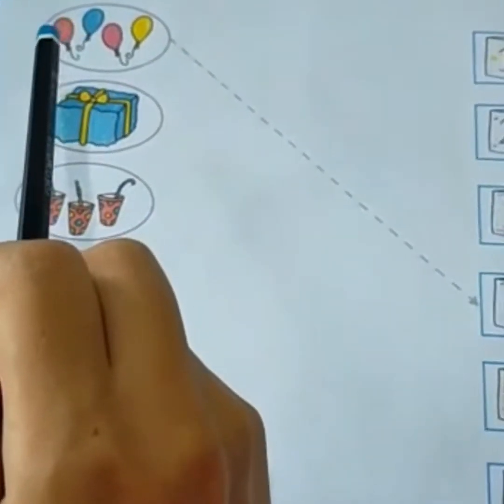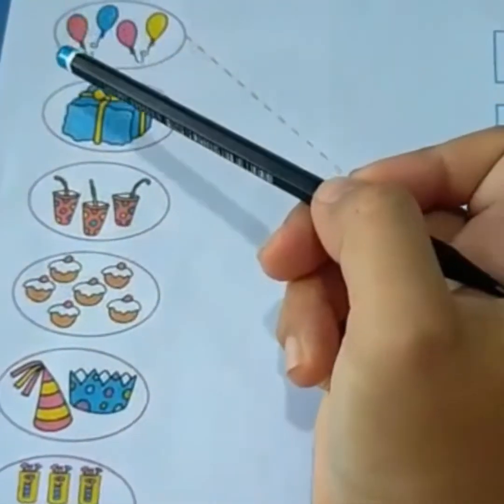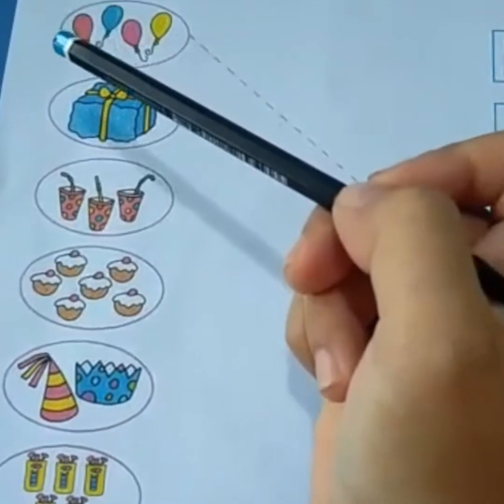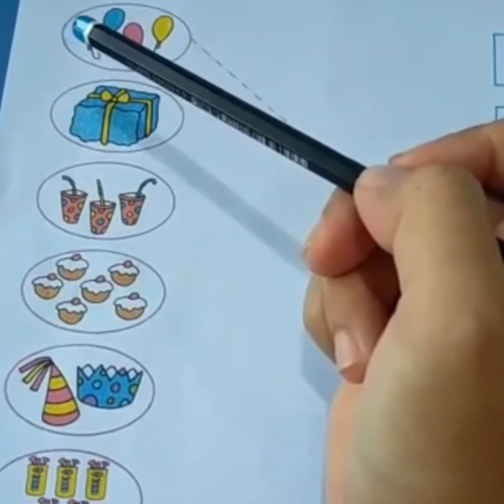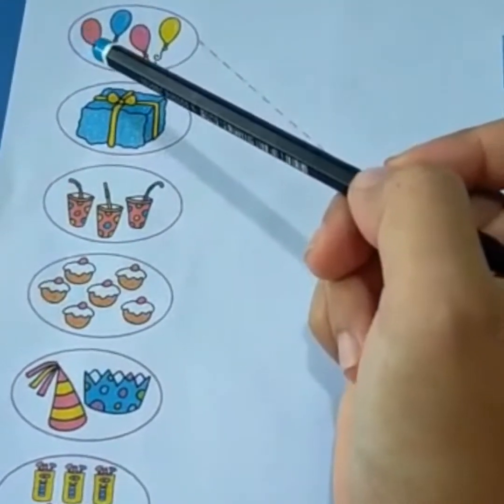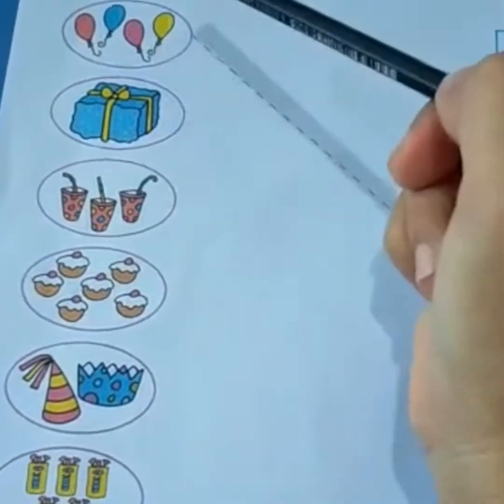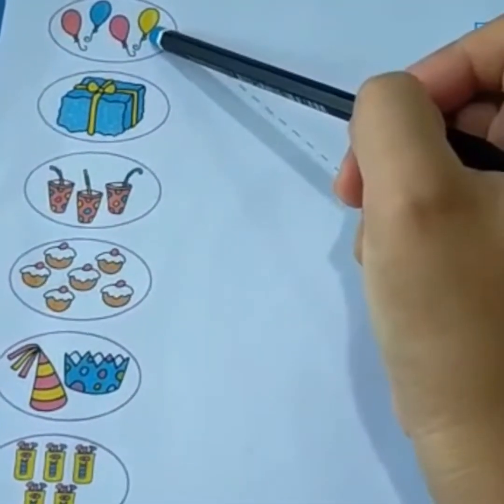Let's count together with teacher Nida. Picture number 1, say balloon. How many balloons, honey bunny? 1, 2, 3, 4. Say 4 balloons.